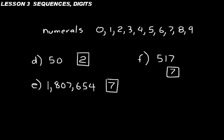Okay, so digits. Those are the numerals that we use to make a number. That's what those are. 0, 1, 2, 3, 4, 5, 6, 7, 8, and 9. Okay, well, that's all for lesson 3.